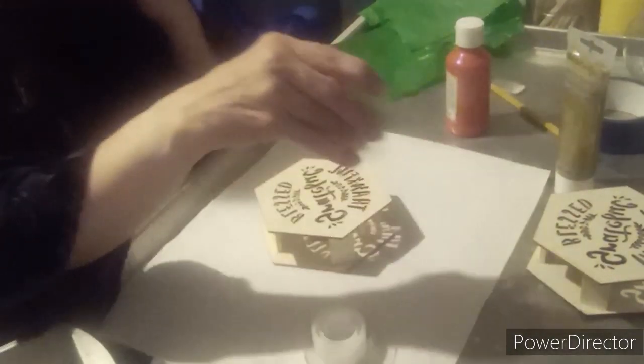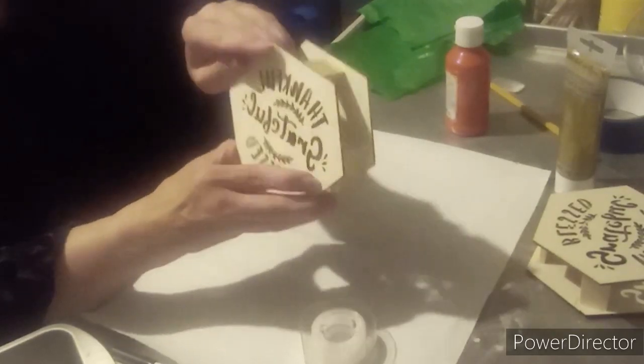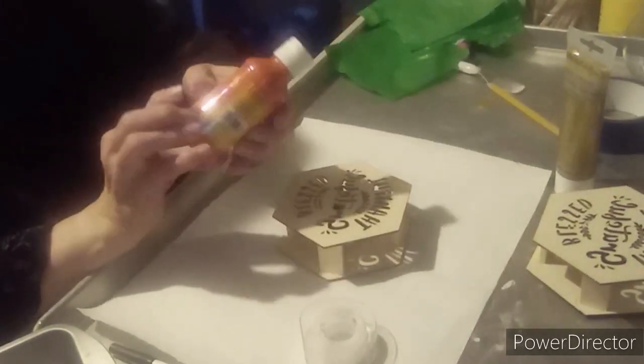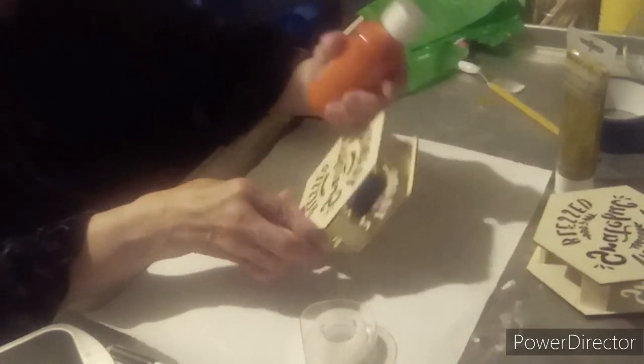And now I'm going to be painting this. I'm going to paint it, I think an orange. Because the letters are going to be glowing green.